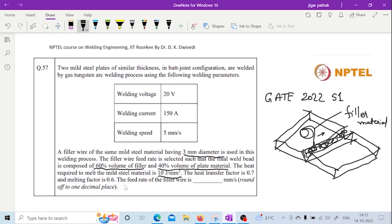The feed rate of the filler wire used needs to be found. So we need to find the feed rate of the filler wire. First, we need to have an idea about the area of the weld bead. And in order to have an idea about the area of the weld bead,